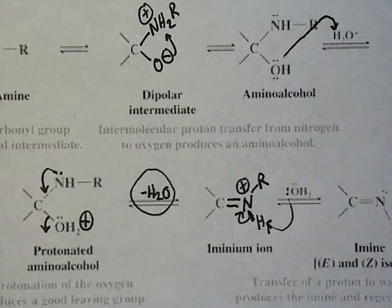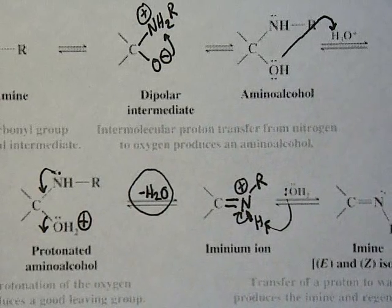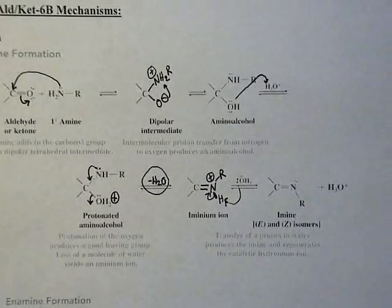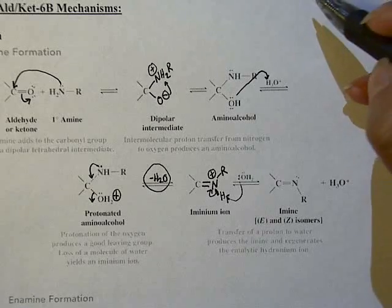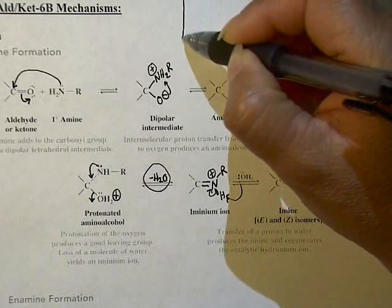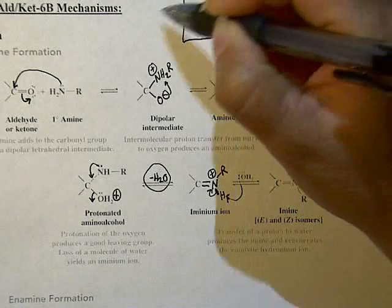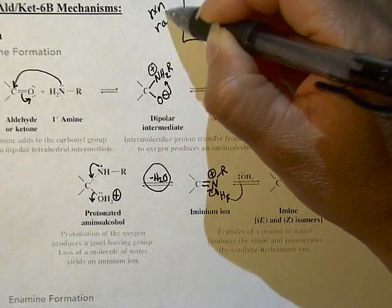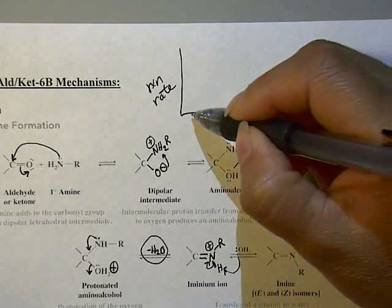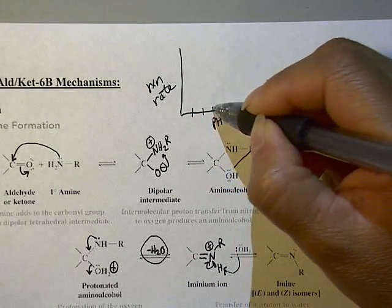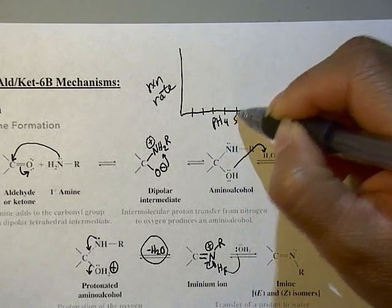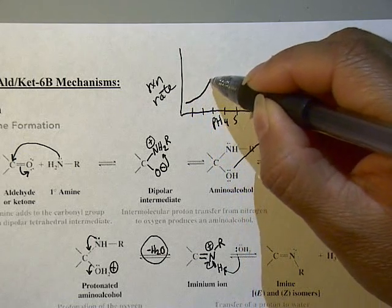That's the mechanism of imine formation. Now let's look at the question of why this reaction is best carried out at a pH of 4 to 5.